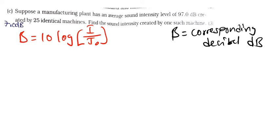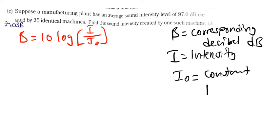Then what else do we know? This is the intensity we are trying to find. Then I0 or I initial is the constant, the threshold. And this is always 1.0 times 10 raised to the power negative 12 watts per square meter.